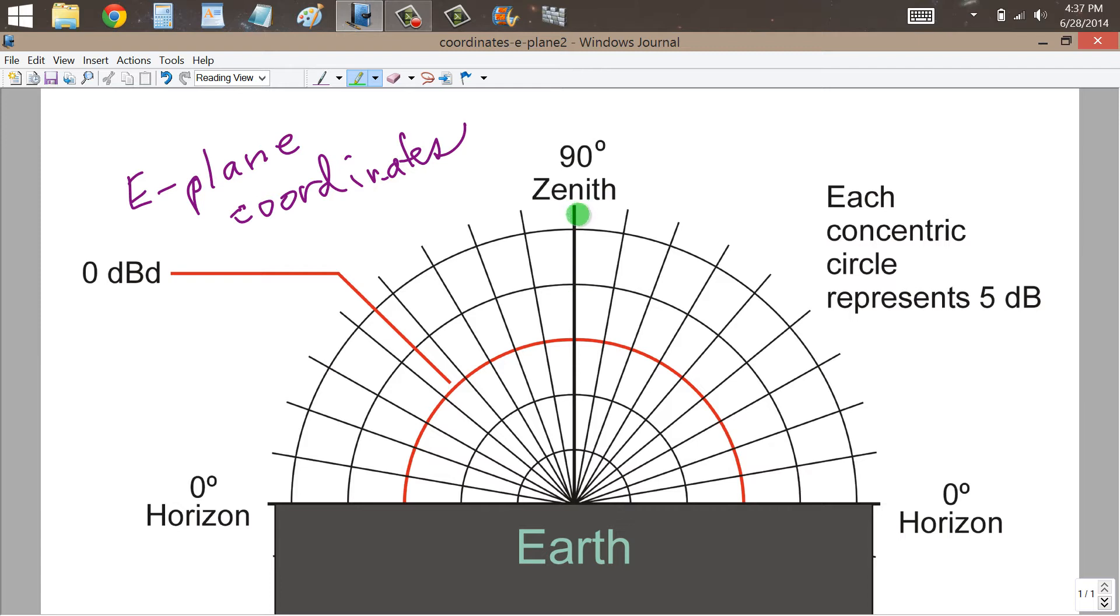So that straight up like this is the zenith, 90 degrees elevation. The horizon, 0 degrees. So you have elevation 10, 20, 30, 40, 50, 60, 70, 80, 90. And then your antenna would be positioned right there at the center where the zenith line intersects the surface of the Earth. When you plot an E-Plane pattern for an antenna, you have to know how the antenna is oriented with respect to this particular plane.